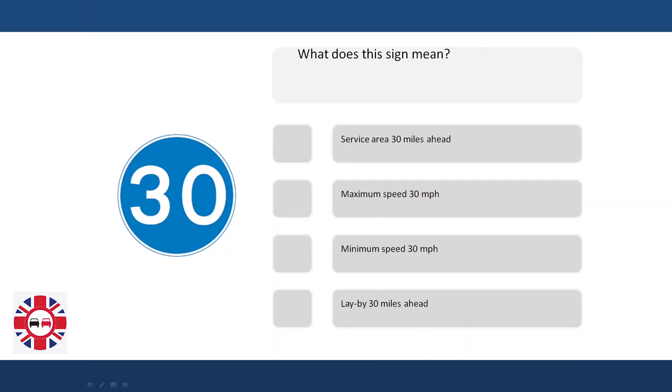What does this sign mean? Service area 30 miles ahead? Maximum speed 30 miles per hour? Minimum speed 30 miles per hour? Lay-by 30 miles ahead?